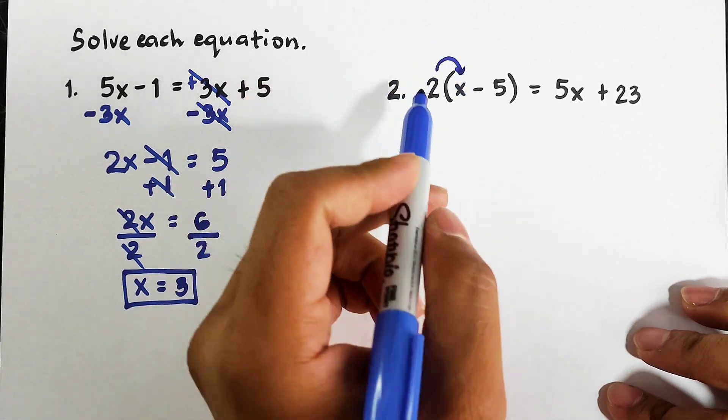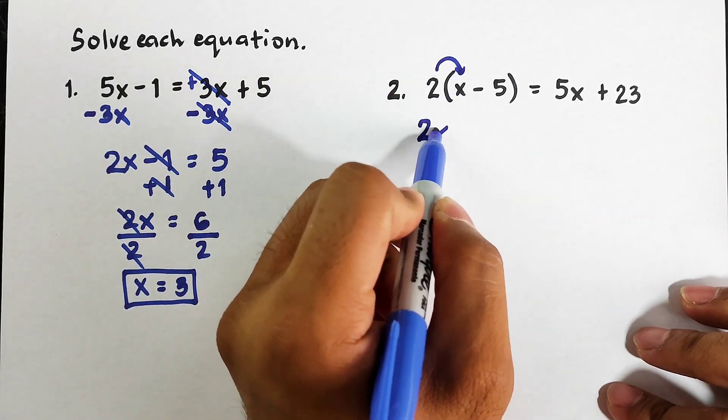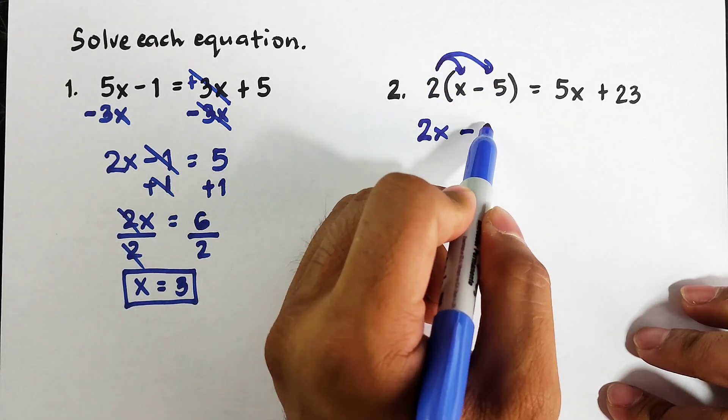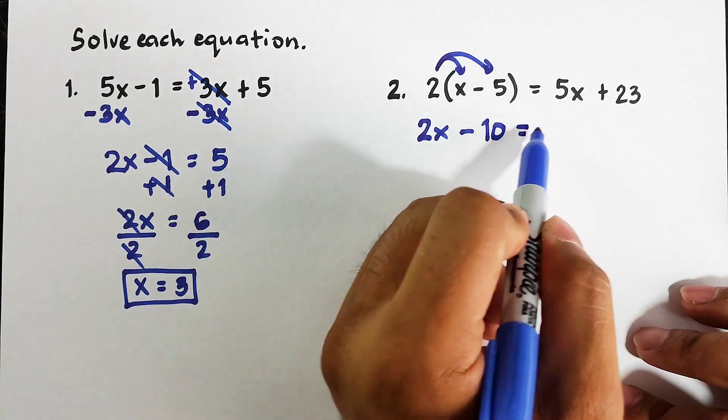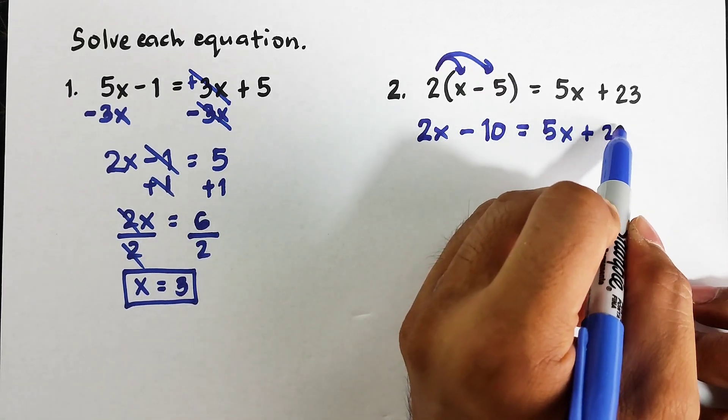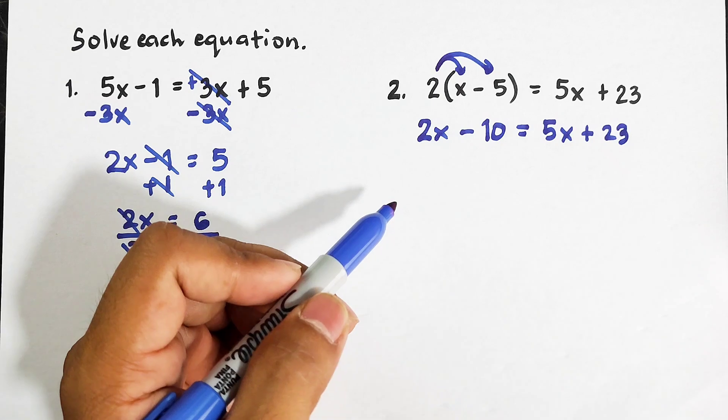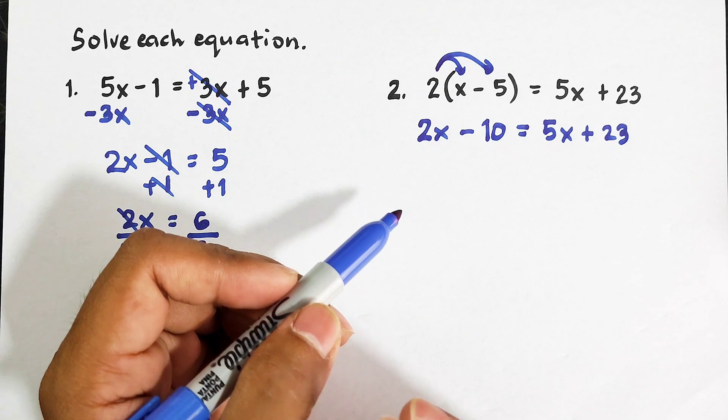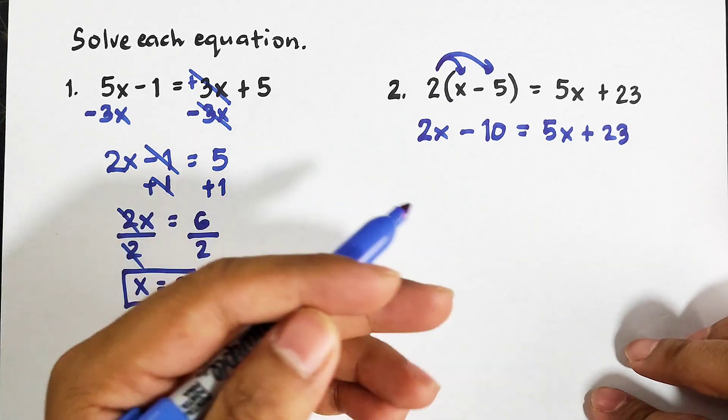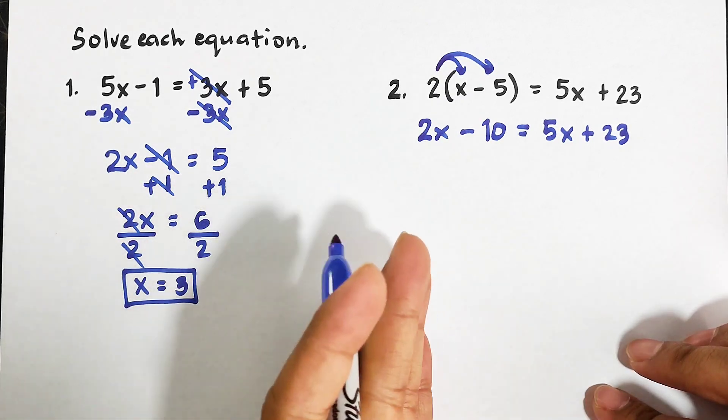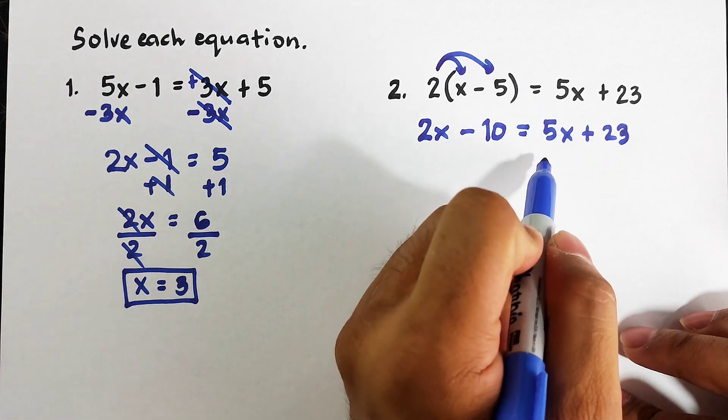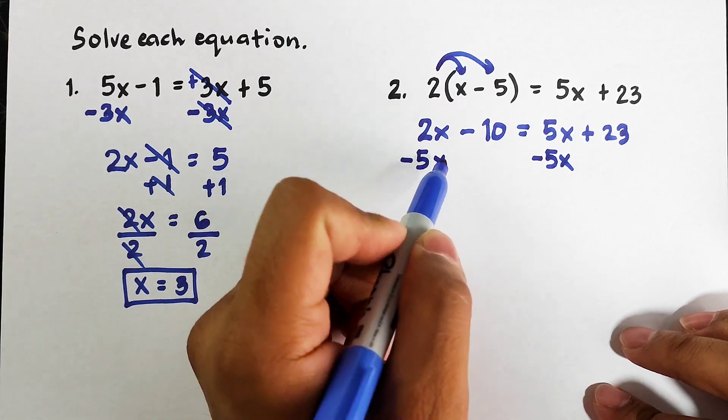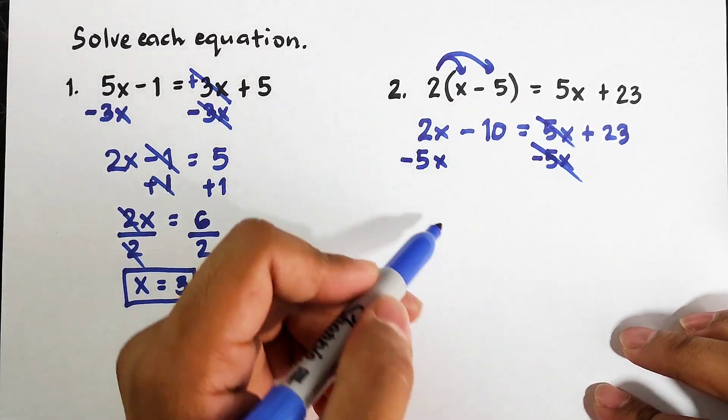So we will multiply this 2 times x, that would be 2x. This 2 times negative 5, that is negative 10. Copy 5x + 23. Now we need to put all the variables here on the left side. But actually we can also put the variables on the right side, but again as usual we are doing it on the left side. So we need to eliminate this by subtracting both sides of the equation by 5x. Zero, zero. This is negative 3x.